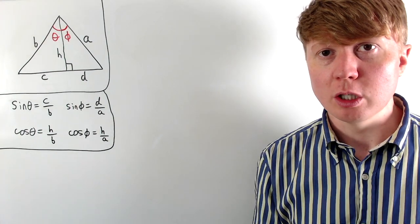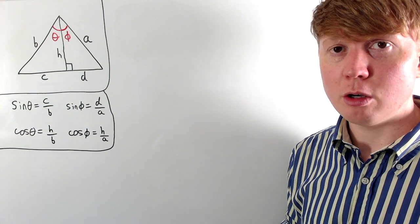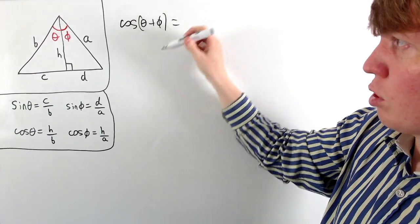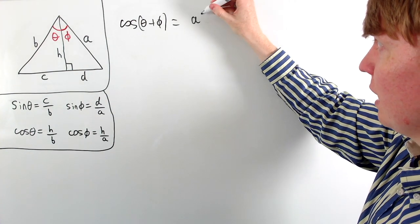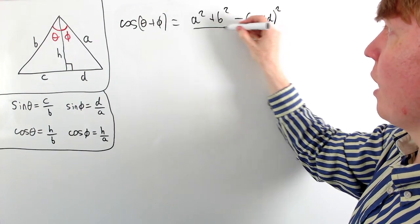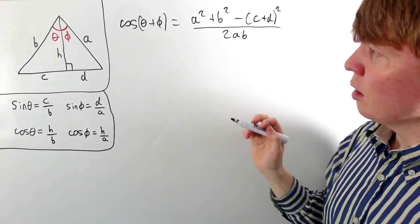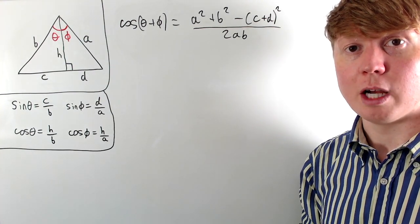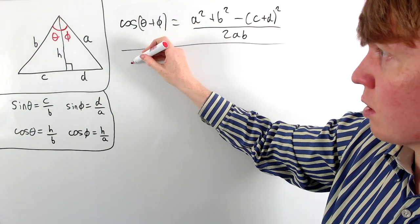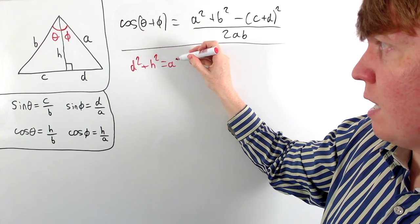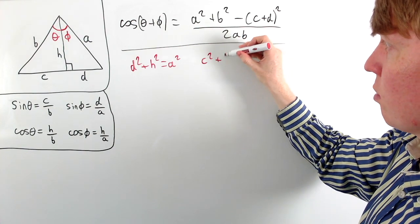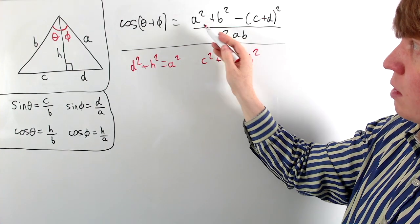Our starting point for cosine is the cosine rule, rearranged to make cosine of the angle the subject. So cos(θ + φ) equals the sum of squares of the two adjacent sides — a squared plus b squared — minus the square of the opposite side, written as minus (c + d) all squared, divided by 2ab. We then use Pythagoras's theorem: in the right-angled triangles we have d² + h² = a² and c² + h² = b².